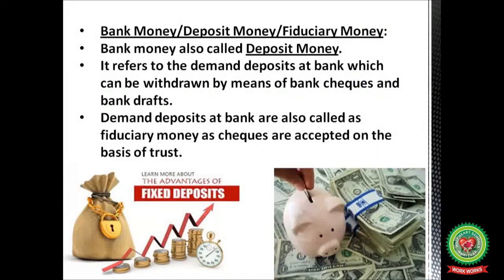Bank money is also called deposit money or fiduciary money. These are deposits made by bank customers in their saving accounts or current accounts. It refers to demand deposits at the bank which can be withdrawn by means of bank checks and bank drafts. Demand deposits at banks are also called fiduciary money because checks are accepted on the basis of trust.